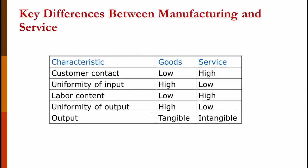Let's talk about the key differences between manufacturing and service — keeping in mind that these are averages and there are exceptions to everything. In terms of customer contact, it tends to be low in manufacturing and high with services: when you buy a car from Honda, you're at the dealership for an hour or two; when you eat at a restaurant, you're dealing with a server throughout your entire meal. Inputs in goods production tend to be very uniform — Honda's tires and transmissions meet very specific specifications — while a restaurant buys agricultural products that have no uniformity.